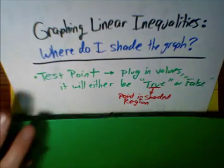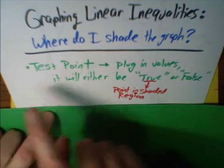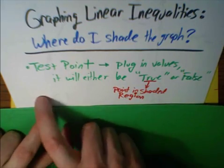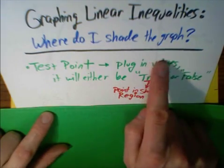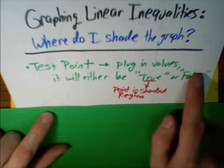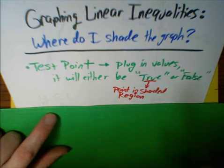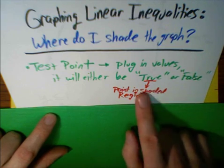There's one method, which is a tried and true method, and that's called using a test point. So you pick a point somewhere on the graph, and that point is either going to be shaded or not shaded. You pick a point, plug the values into your inequality, and you're going to result with either a true situation or a false situation. If it's true, then that point lies within the shaded region. Go ahead and shade the rest of that region.